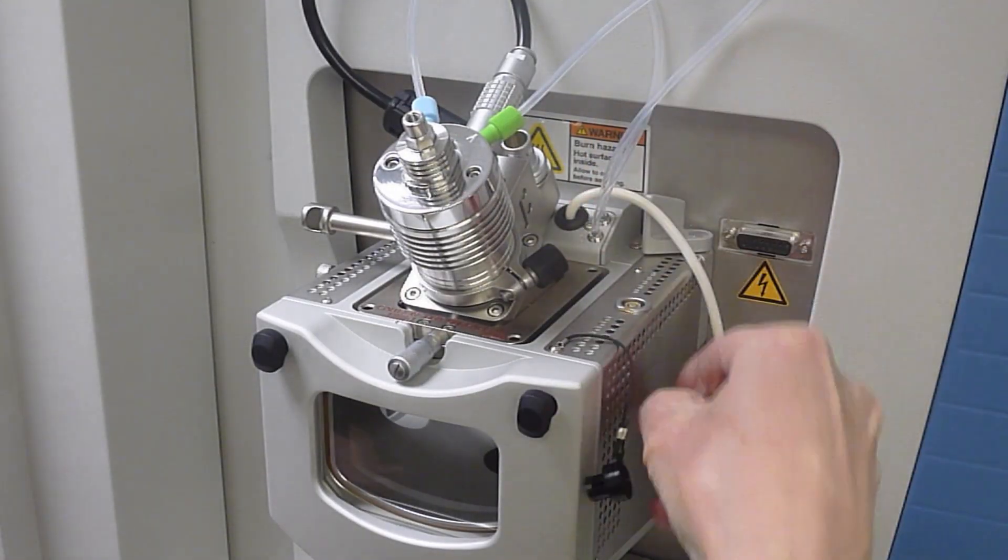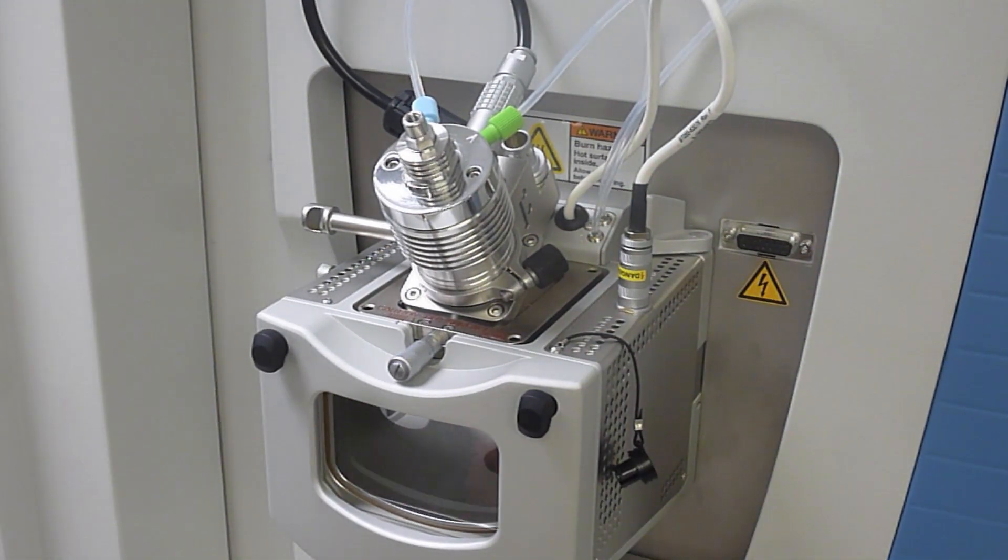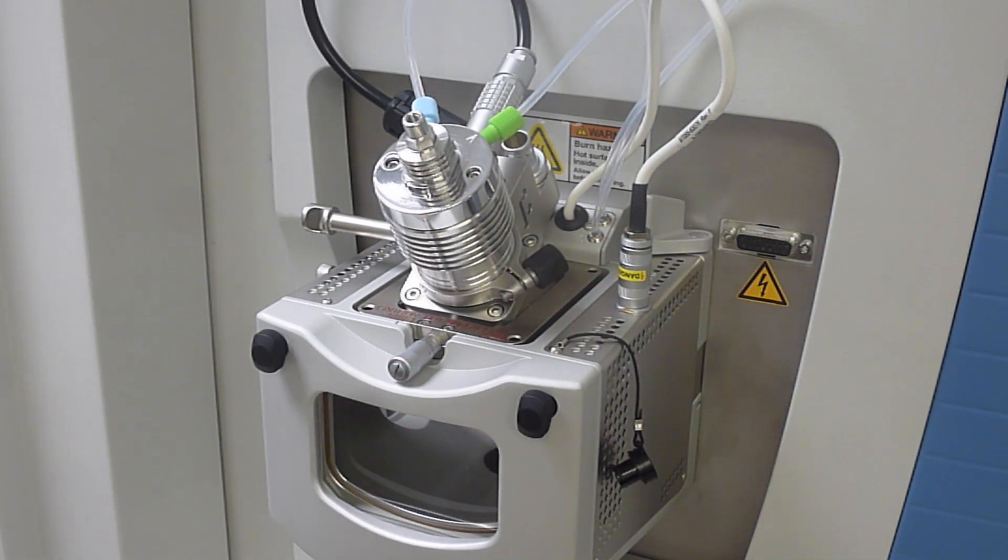Remove the plastic plug from the right hand side of the spray chamber and plug the HV cable into the socket. This is the cable that otherwise supplies the spray voltage to the ESI probe.